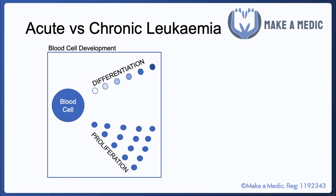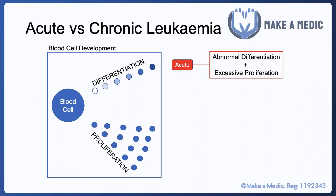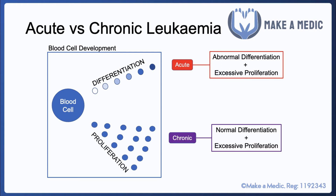You also get proliferation — especially, for example, in response to an infection, you'll get an expansion in the population of white blood cells. This is really where the difference between acute and chronic leukemias lies. In acute leukemia you get abnormal differentiation and also excessive proliferation, whereas in chronic leukemias you get normal differentiation and the production of mature white cells, however the proliferation of those white cells is excessive.